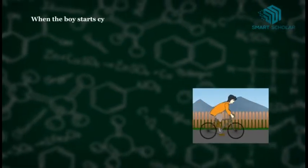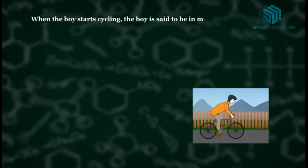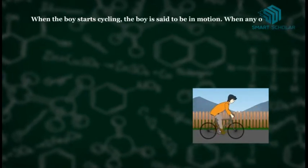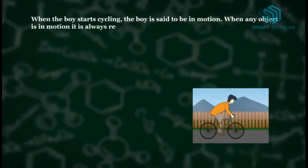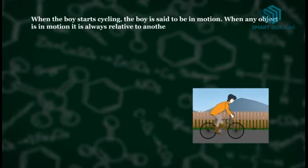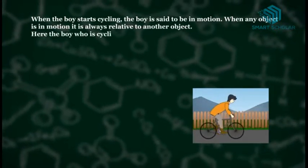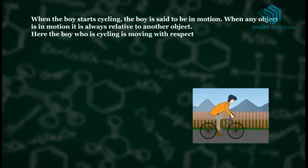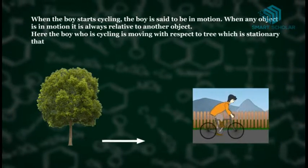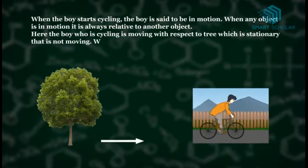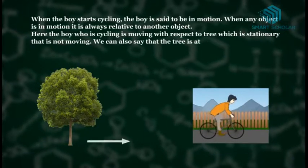When the boy starts cycling, the boy is said to be in motion. When any object is in motion, it is always relative to another object. Here, the boy who is cycling is moving with respect to a tree which is stationary—that is, not moving. We can also say that the tree is at rest.